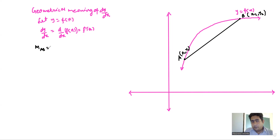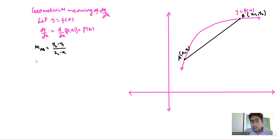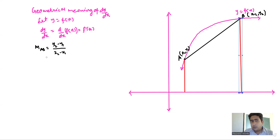So this line AB is a chord of this graph. Now if you want to find the slope or gradient of this chord, the formula will be (y₂ − y₁) divided by (x₂ − x₁). Some constructions are required here: from point A I'll drop a perpendicular to the x-axis, and from point B also — so AM is perpendicular to the x-axis and BN is perpendicular to the x-axis.